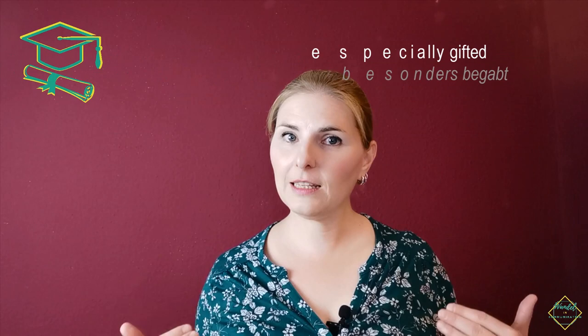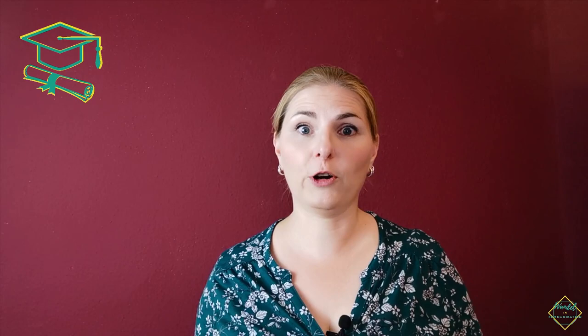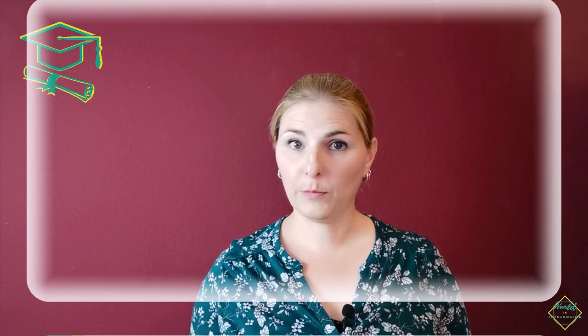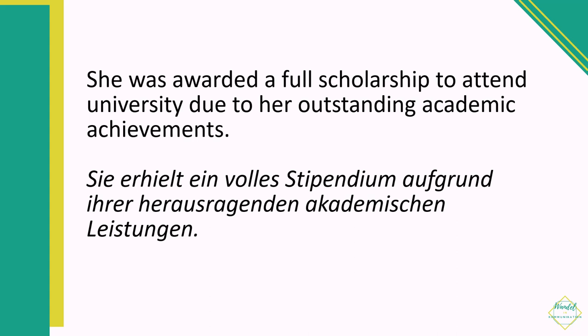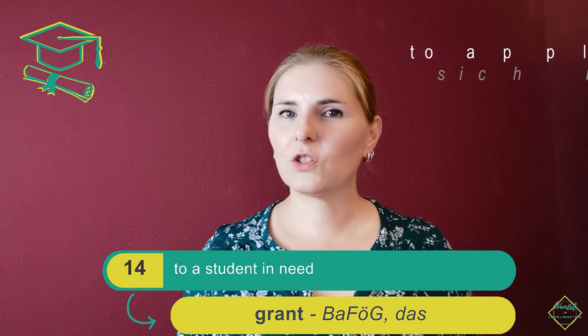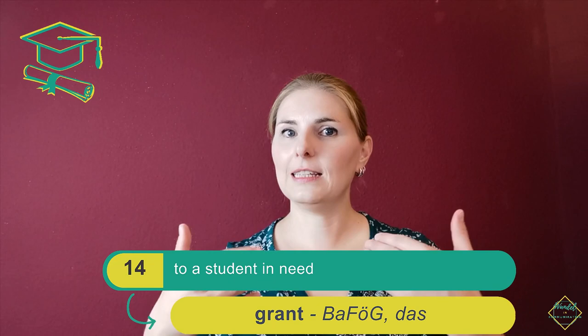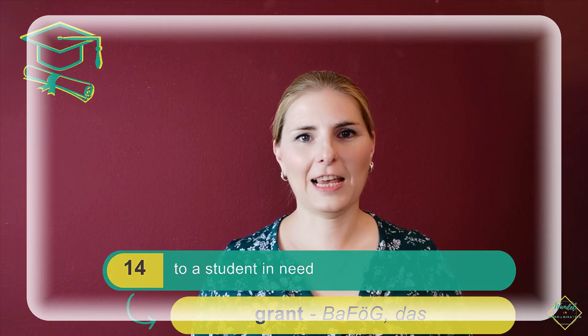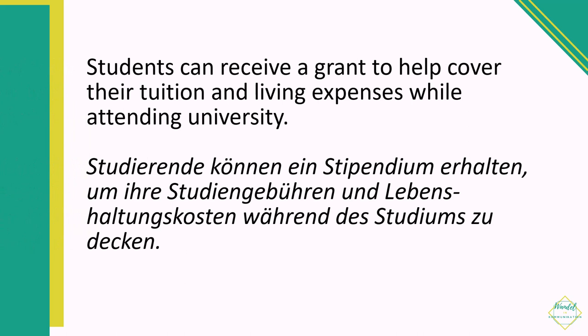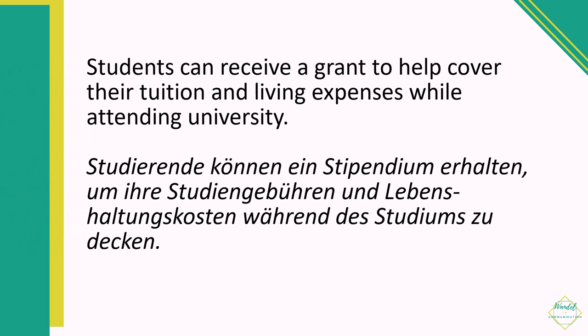If there is a student who is especially gifted — be it that they learn really fast or maybe they are really good at playing football — then this student can get a scholarship, ein Stipendium. So all expenses, or a lot of the expenses, are paid for by the scholarship. For example: 'She was awarded a full scholarship to attend university due to her outstanding academic achievements.' If, on the other hand, the student just doesn't have the money to go to university — because in America and England studying is incredibly expensive — then this student could apply for a grant. In Germany, grant would be closest to our BAföG. A grant is money given to a student if they cannot afford to go to an educational institution. For example: 'Students can receive a grant to help cover their tuition and living expenses while attending university.'